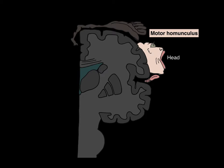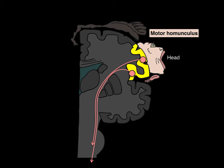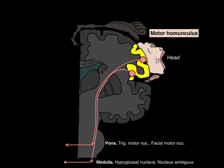You'll also notice in the motor homunculus there are elements of the head. That part of the cerebral cortex is dedicated and the upper motor neurons come down, with 50% synapsing with lower motor neurons on the ipsilateral side and 50% decussating to synapse with lower motor neurons on the contralateral side. In the pons, they synapse with the trigeminal and facial motor nuclei, and in the medulla, the hypoglossal nucleus and the nucleus ambiguus.